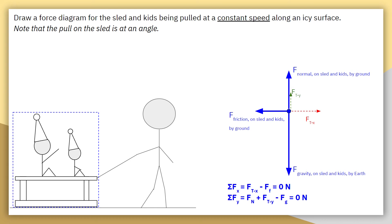We can also write that without the parentheses, just to show that Fn, plus Fty, minus Fg. And mathematically, that would be equivalent.